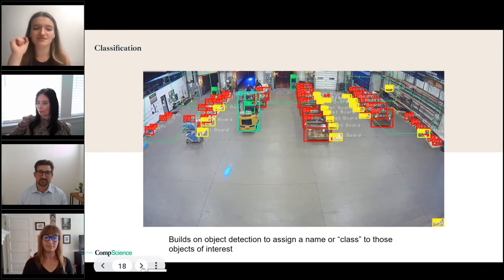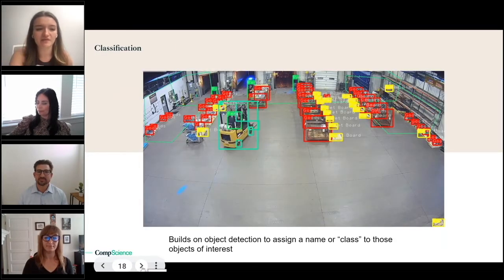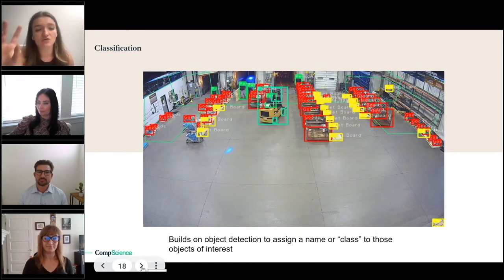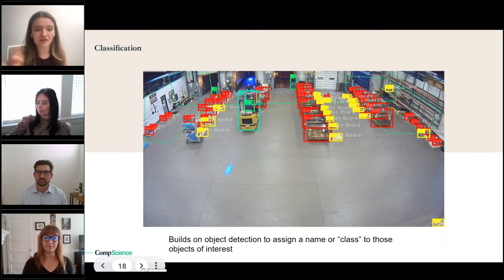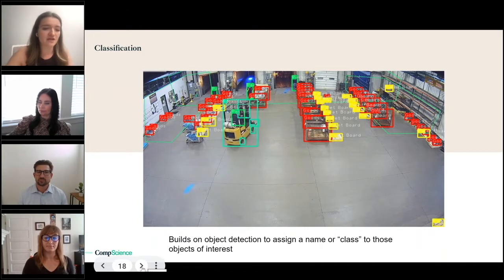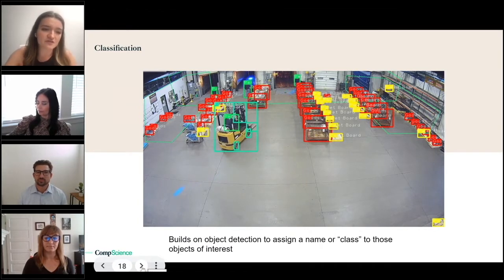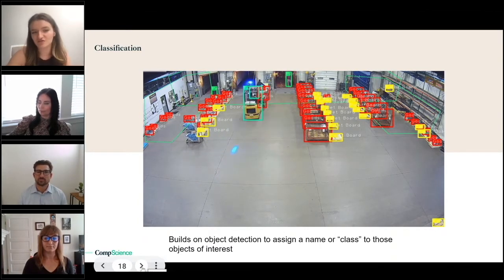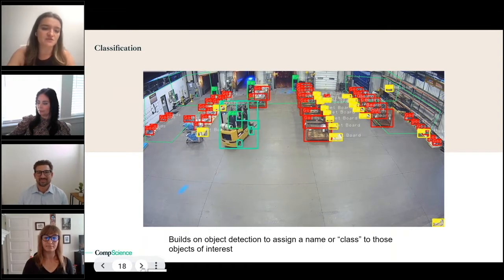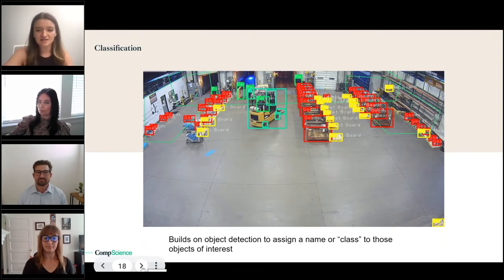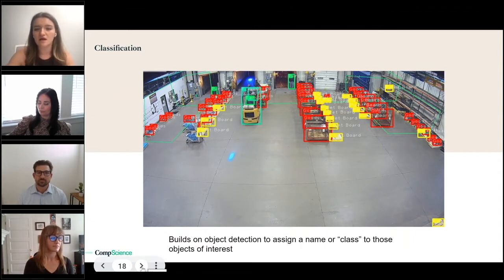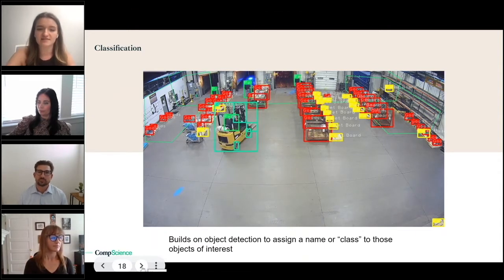If you look closely, there are labels for each object in the scene. They're also color-coordinated — palette boards are yellow, the person is green, the forklift is a different shade of green — but basically we're just assigning names to the objects.